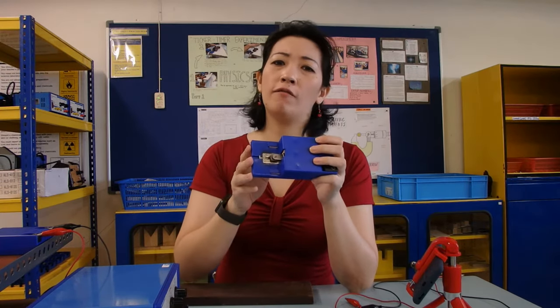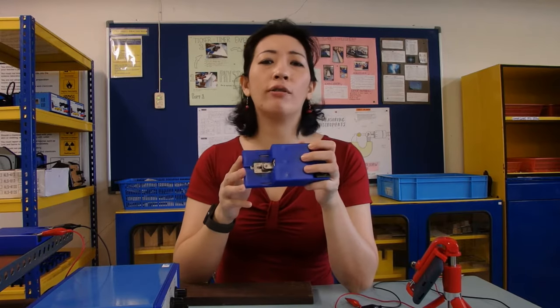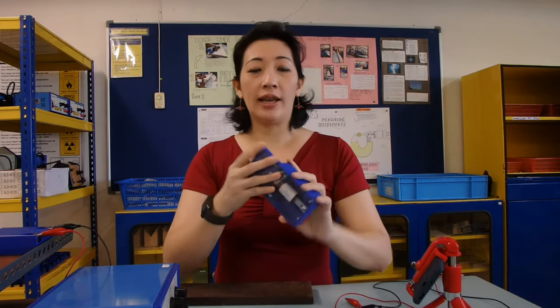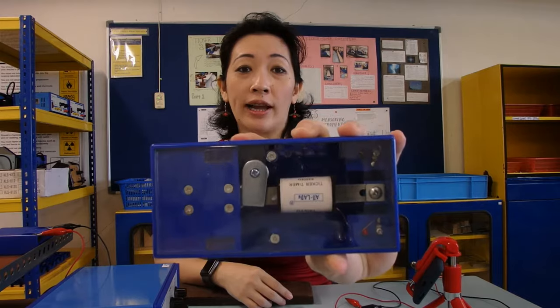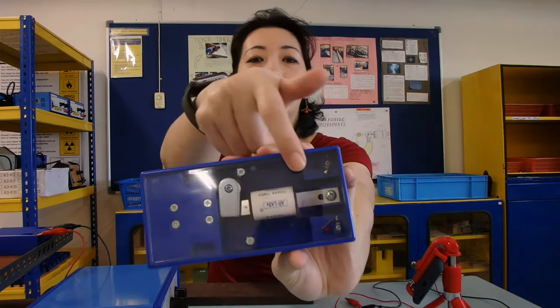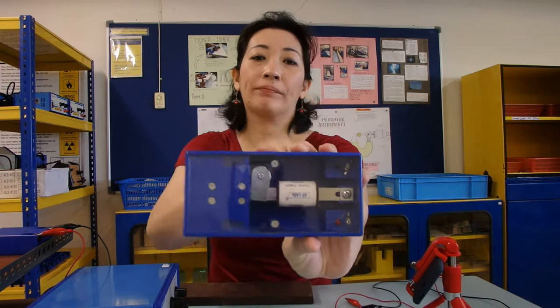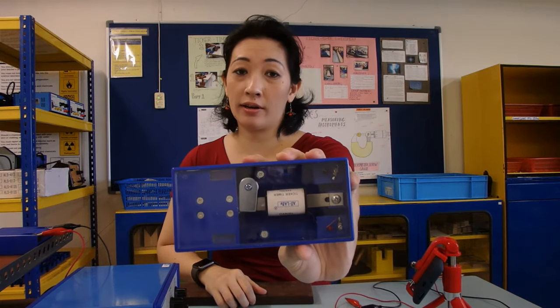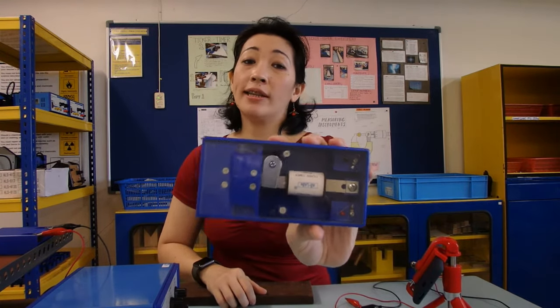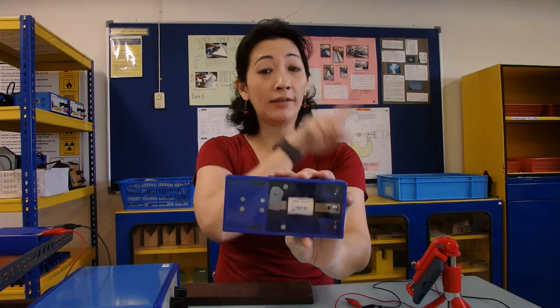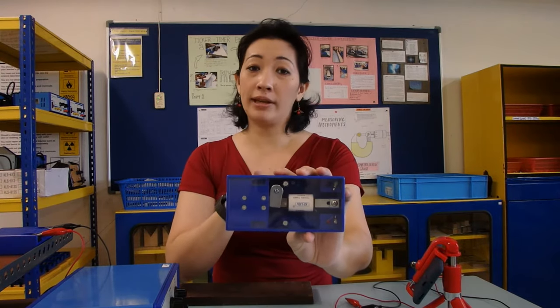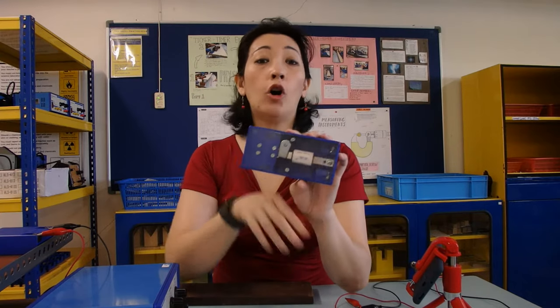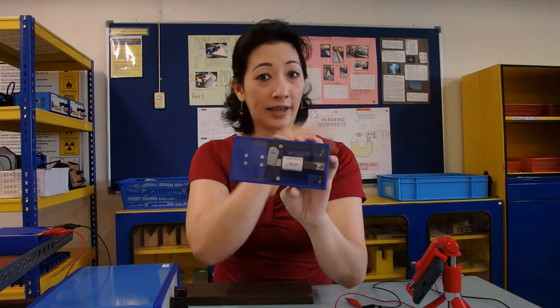Inside the ticker timer, as you can see there is actually a coil. This coil will get magnetized when current flows through it. Because we know that alternating current changes direction every half cycle, that means the magnetic poles of the coil also changes every half cycle.